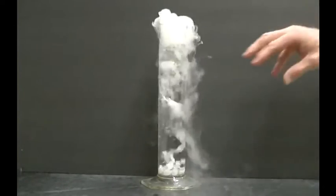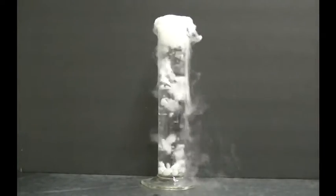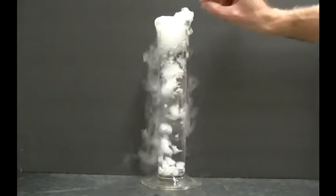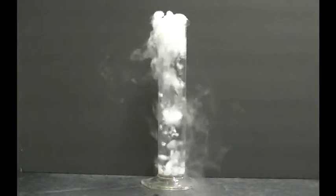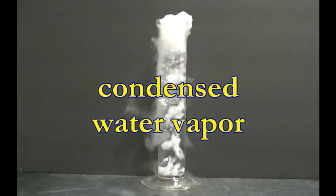And those little, tiny, liquid droplets of water get suspended in the air. As they move away, they'll evaporate back into the air. These little, tiny, liquid droplets are sometimes called condensed water vapor. And this is the same stuff that clouds in the sky are made from.